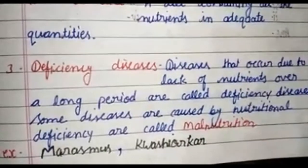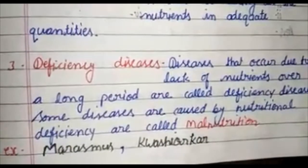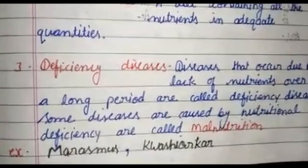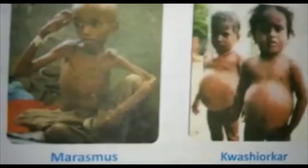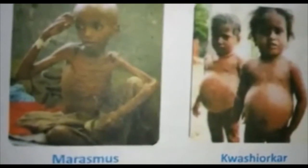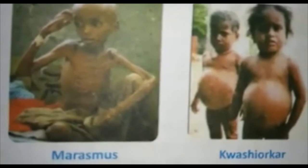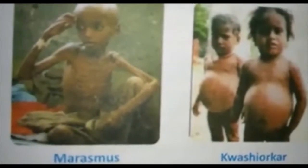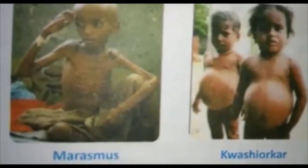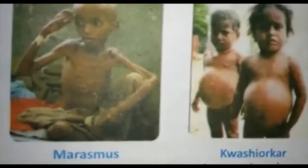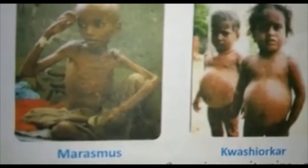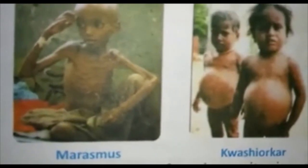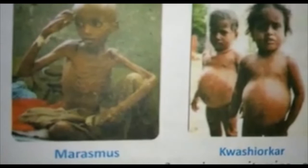Some diseases are caused by nutritional deficiency, also called malnutrition. For example, marasmus and kwashiorkor. Marasmus is caused due to calorie deficiency. It results from insufficient intake of carbohydrates and proteins. The body consumes its fat reserves and tissue proteins. The body becomes lean and weak, eyes become depressed and skin becomes wrinkled.